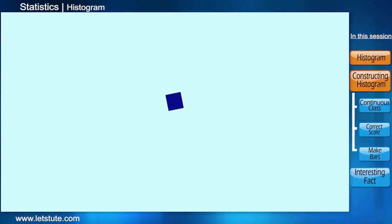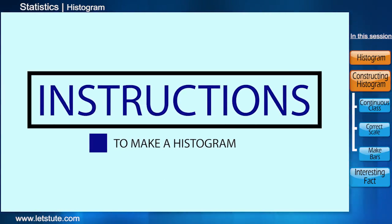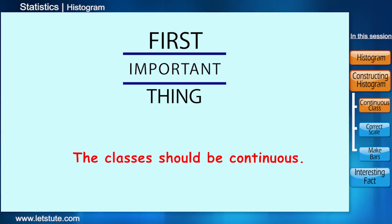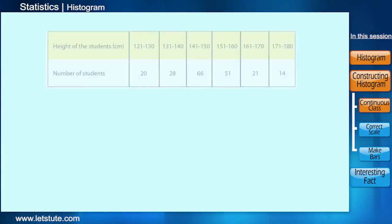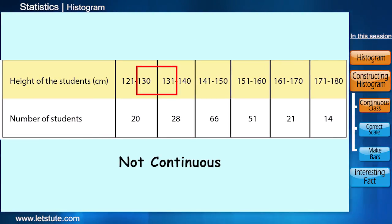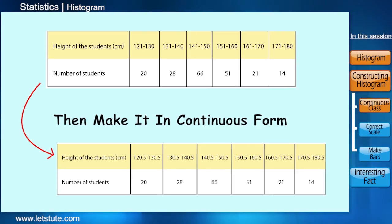Before that we need to have a look at the rules or the instructions that we need to make a histogram. The first important thing is the classes should be continuous. Now this is one of the most important rule or condition that we need to look for, and if the given data or classes are not in the continuous form then we will have to make it continuous.